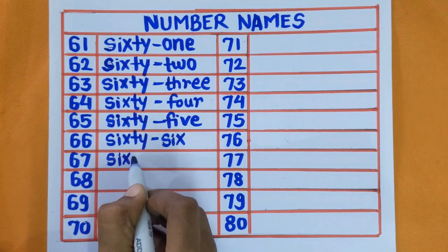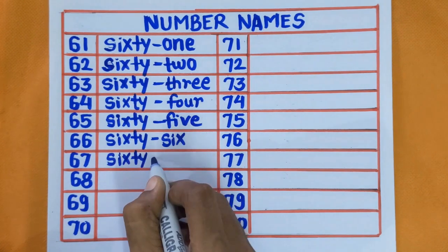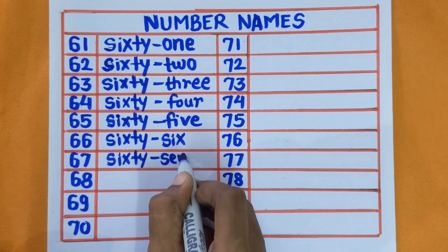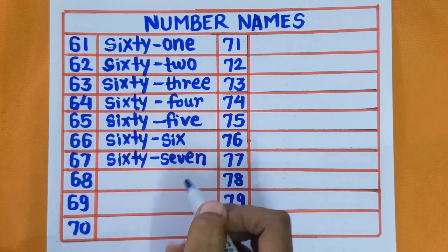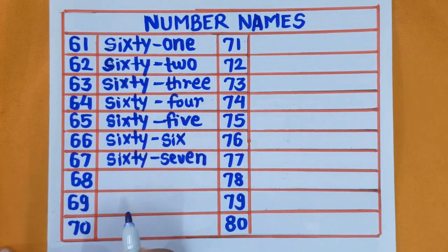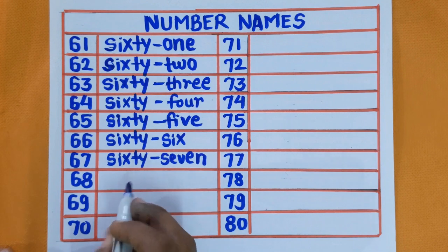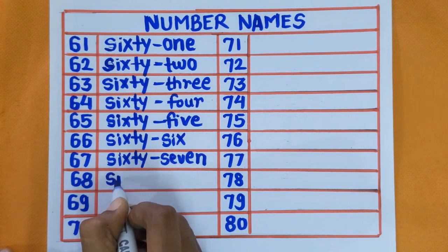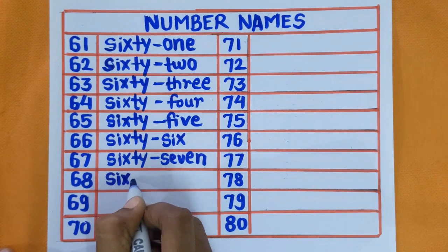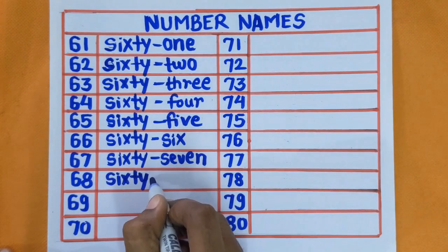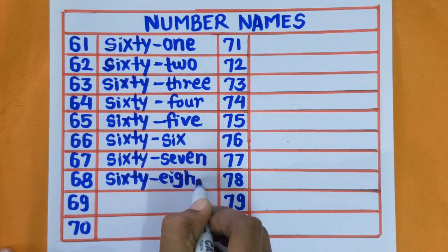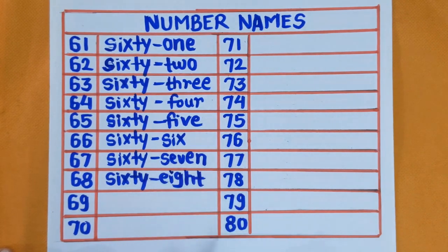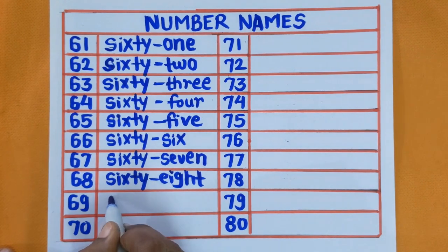67 — S-I-X-T-Y-S-E-V-E-N. 67. Next number is 68 — S-I-X-T-Y-E-I-G-H-T. 68. Next is number 69.